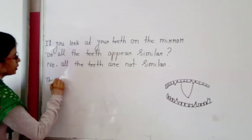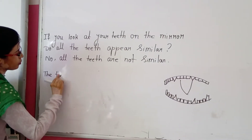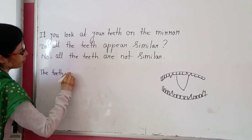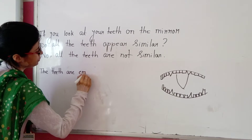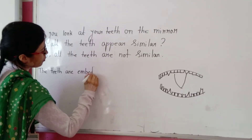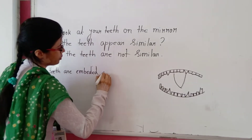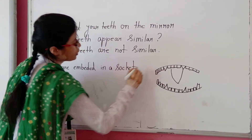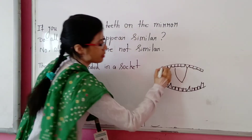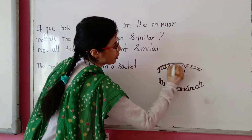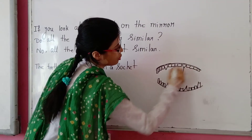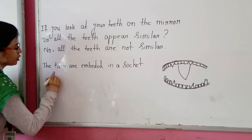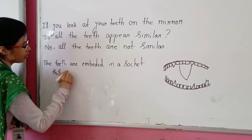The teeth are embedded in a socket. The red part of your teeth — just this part — is called the socket. All the teeth are embedded in a socket. This is called the gum.